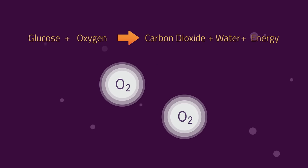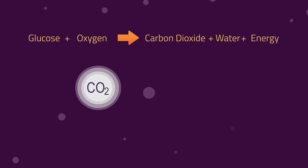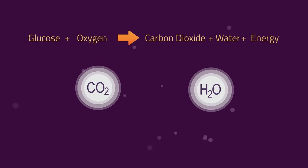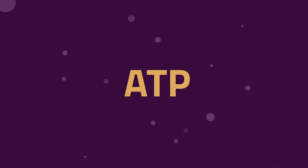Glucose is broken down by oxygen to release the by-products of carbon dioxide and water. Energy is released, which is then used to make a special energy molecule called ATP.